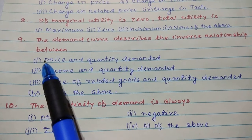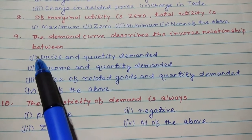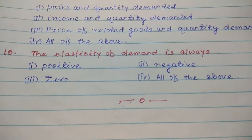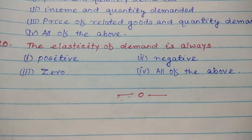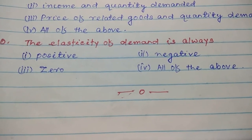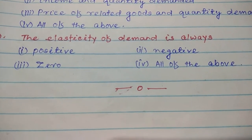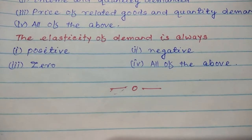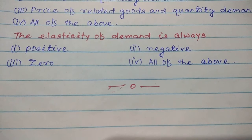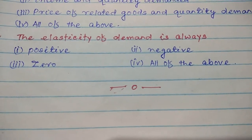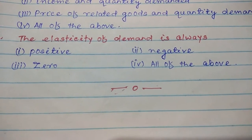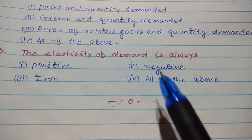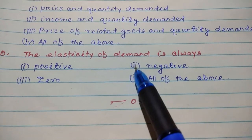Number ten: The elasticity of demand is always I. Positive, II. Negative, III. Zero, IV. All of the above. Since quantity demanded and price always move in opposite directions to one another, the value of elasticity of demand is always negative. So the answer for number ten is II. Negative.